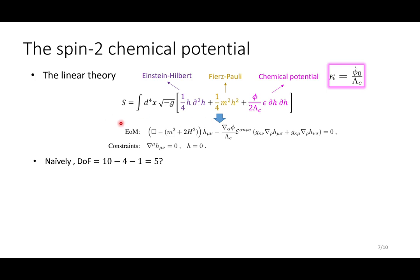We vary this action with respect to the spin-2 field H and obtain this equation of motion and the usual transverse traceless conditions. So this first term in the equation of motion is the Klein-Gordon term, while the latter term comes from the newly introduced chemical potential.